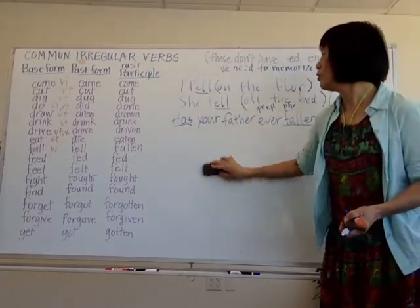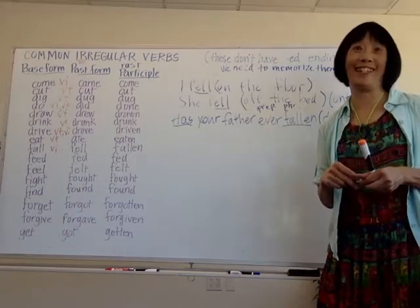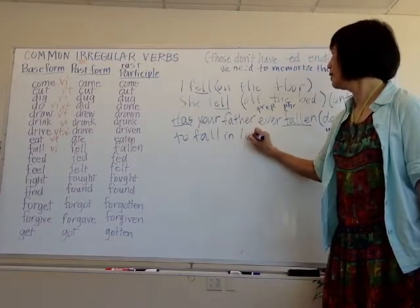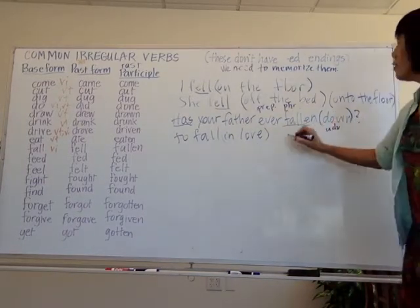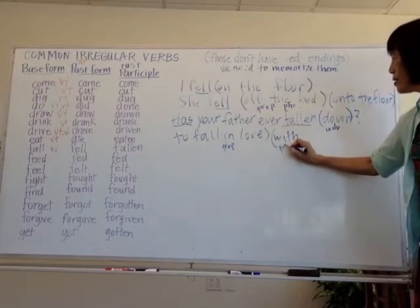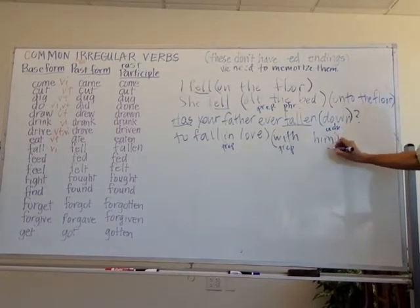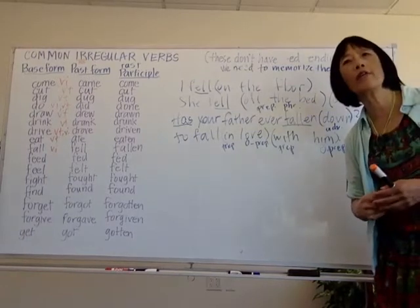We also have idioms with 'fall.' One idiom I like very much is 'fall in love.' It uses a prepositional phrase and no direct object. You can also add another preposition: 'to fall in love with a person.' Here 'person' is the object of the preposition 'with.' So we say 'to fall in love with someone.'